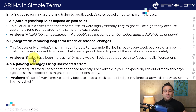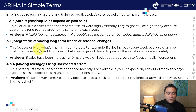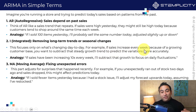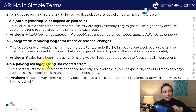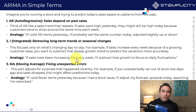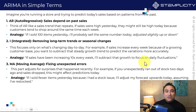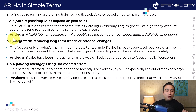The second part is the Integrated component. It simply works by removing long-term trends or seasonal changes, focusing on what's changing day to day. For example, if sales increase every week because of a growing customer base, you would subtract the steady growth trend to predict the variations more accurately. If sales have been increasing by 10 times every week, you remove that trend to focus primarily on daily fluctuations — because with the ARIMA model, we are not actually capturing seasonality.